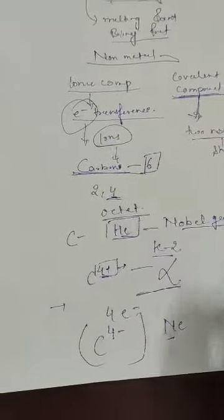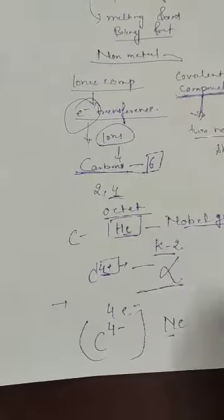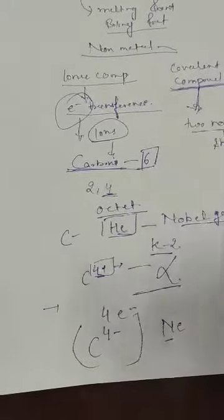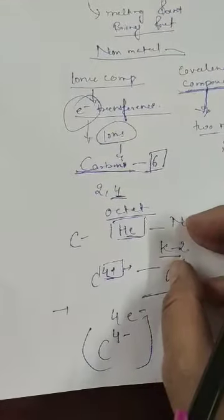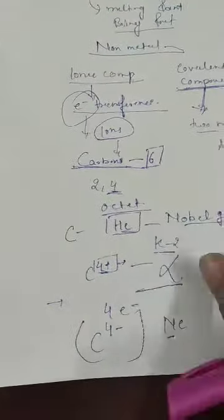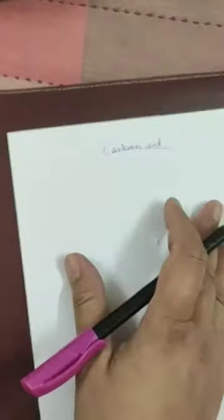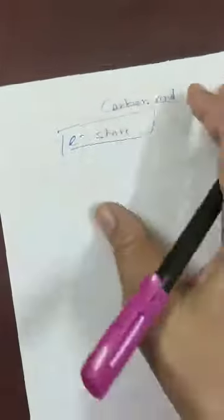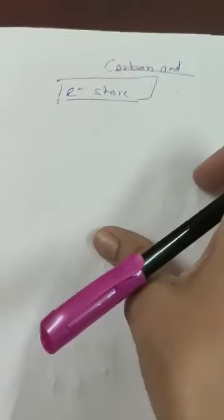When more electrons are added, there is more electron repulsion — the extra electrons will not stay due to repulsion. So gaining 4 electrons is also not possible. To overcome this problem, what carbon does is share electrons.